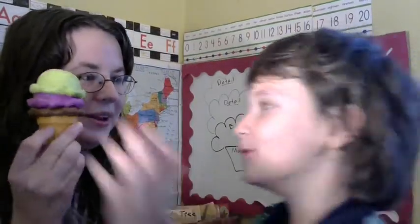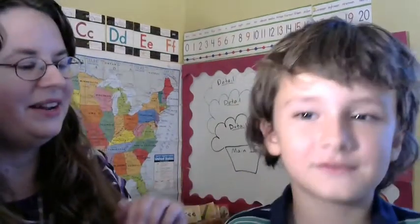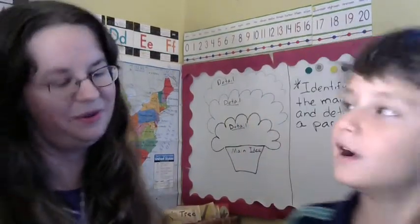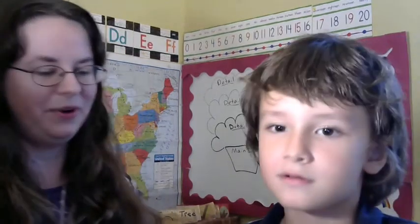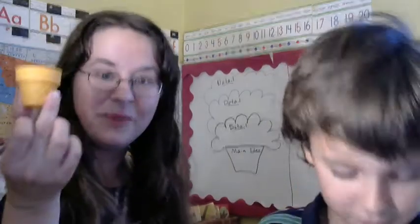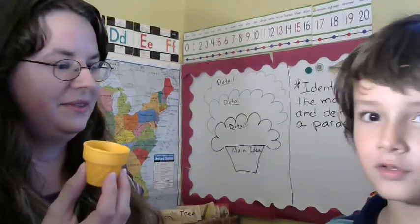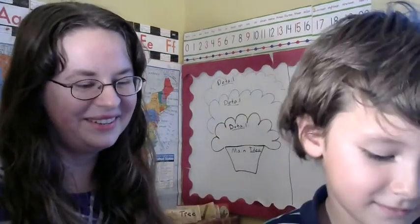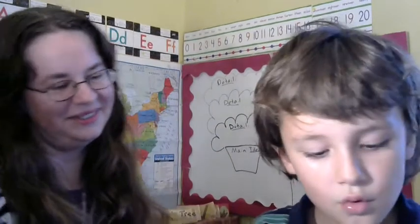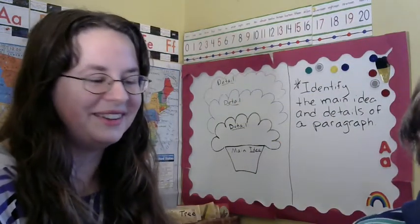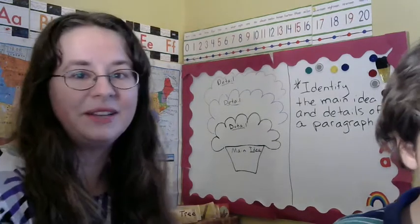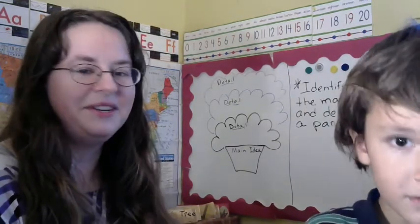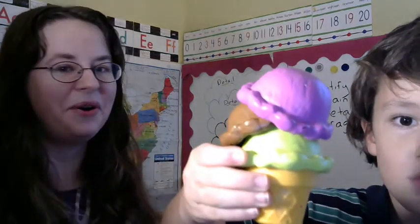Gabriel, do you like ice cream? I love ice cream. Oh, you do? Okay, so today, our main idea is going to be represented by the what? Can you show me? Ice cream. The ice cream, what part? The cone. We're going to use the cone for our main idea, and the details are going to be what? The ice cream. Good, can you put them together for me? I'm going to put the green on first. It looks like a regular ice cream. It does on camera. You've got an interesting ice cream cone.